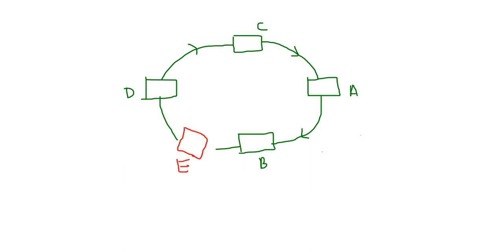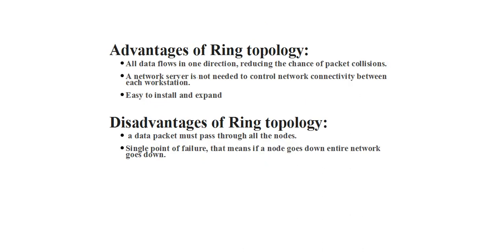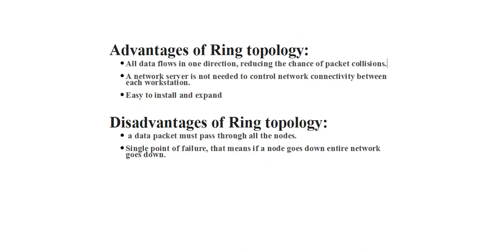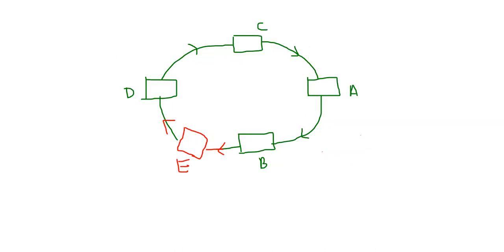Now the disadvantages. First disadvantage: a data packet must pass through all nodes. If A wants to communicate with B, the data packet travels from A through E, D, and C before reaching B, because data moves in one direction only. This is a disadvantage, and it also creates a security problem since data passes through every node.